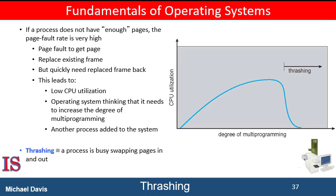The page fault rate increases tremendously. As a result, the effective memory access time increases. No work is getting done because the processes are spending all their time paging. This situation is shown in the figure on the right, in which CPU utilization is plotted against the degree of multiprogramming. As the degree of multiprogramming increases, CPU utilization also increases, although more slowly, until a maximum is reached. If the degree of multiprogramming is increased further, thrashing sets in and CPU utilization drops.